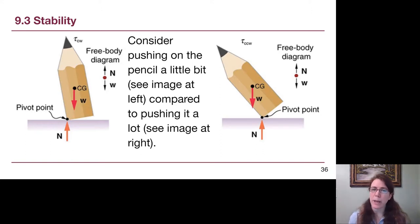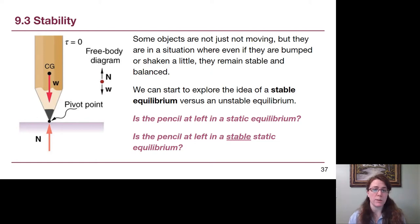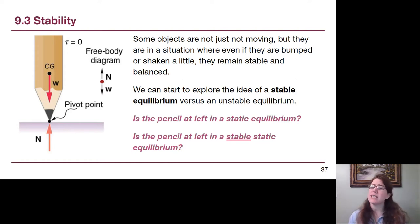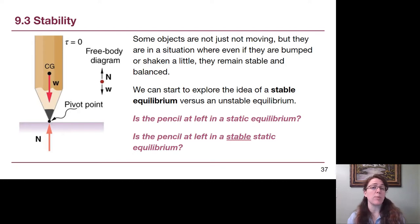This first pencil example is stable until we push too much. The second example — balancing on a tiny point — is different. If we can get it stationary, it is in static equilibrium, but any tiny push, even a breath, causes it to fall right over. So it is not in a stable equilibrium.